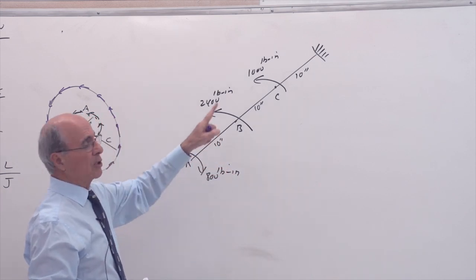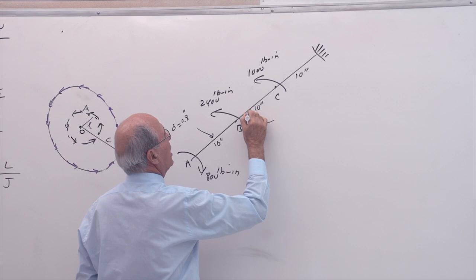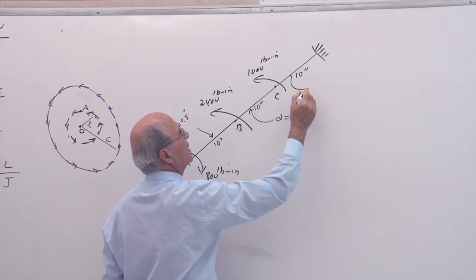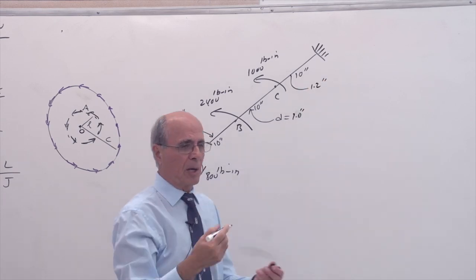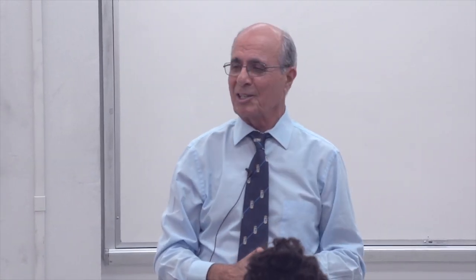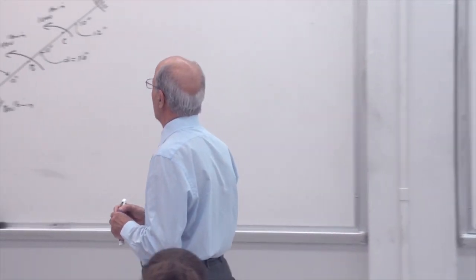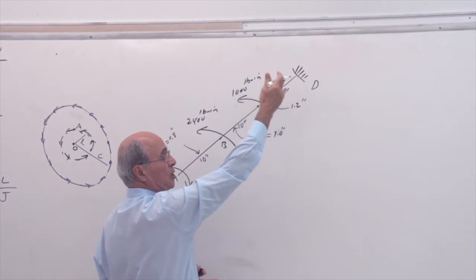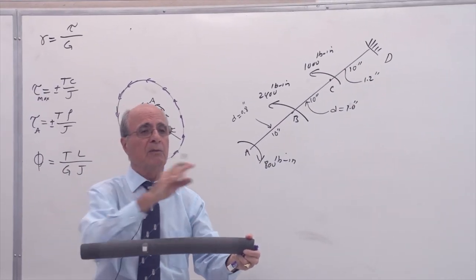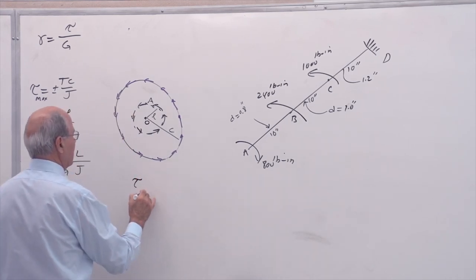The diameters of all parts are given: diameter from A to B is 0.8 inch, diameter from B to C is 1.0 inch, and diameter from C to D is 1.2 inch. The diameter is changing for this exercise, which is for class purposes. We want to find tau_max and also the relative angular rotation — that is phi of A with respect to D, assuming D is fixed.